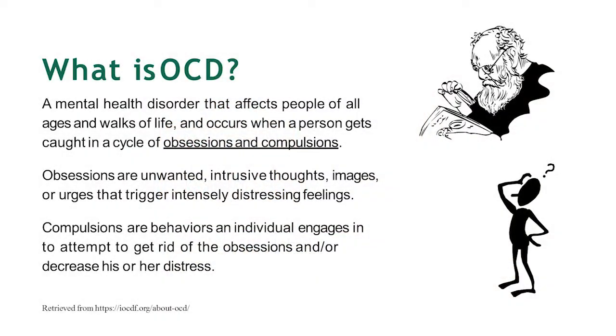So what is OCD? OCD really is getting stuck in the cycle between obsessions and compulsions. We have an obsession, it creates great anxiety, we do a compulsion, and we get stuck in a cycle that keeps circling around. With the DSM-5, OCD got removed from underneath the anxiety classifications and moved into its own classification — it's now under OCD, compulsive and related disorders.